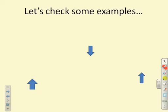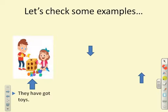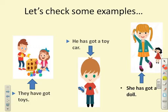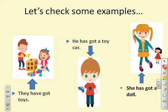Let's check some examples. Look at the first picture: they have got toys. Picture two — he has got or have got? Excellent, he has got a toy car. Example three — she has got or have got? No, she has got a doll. Great job!